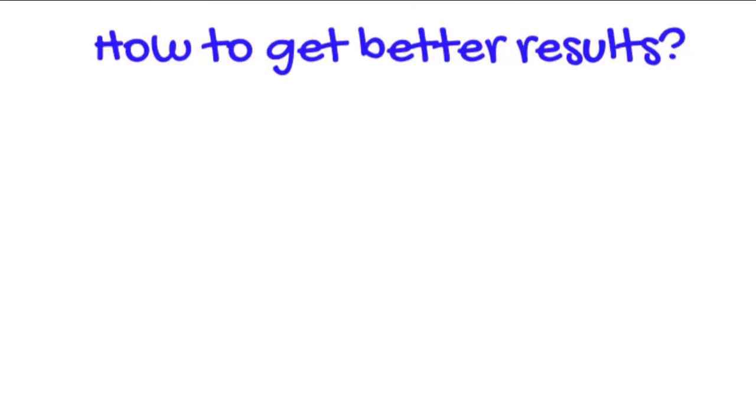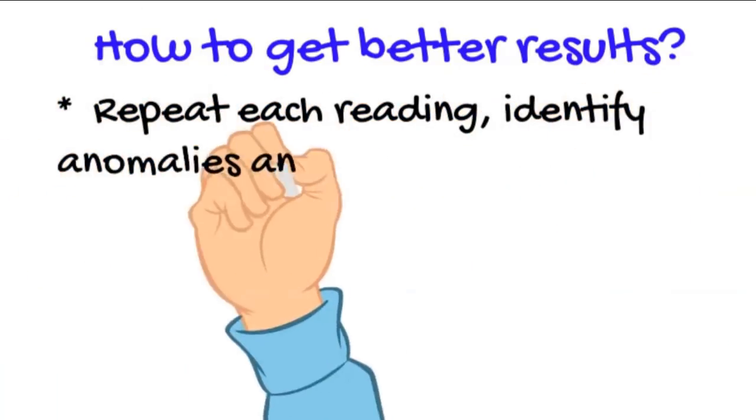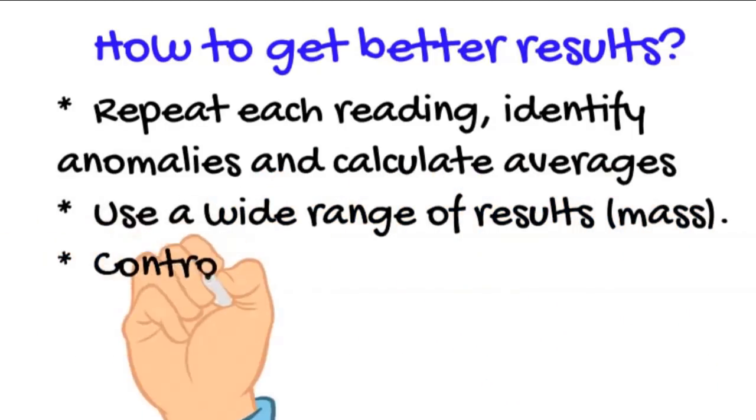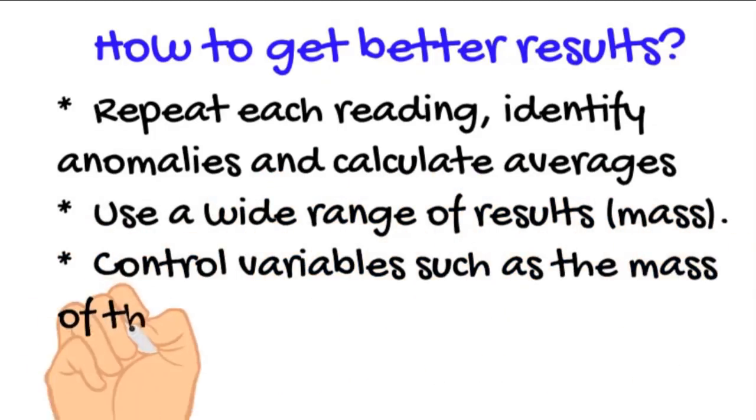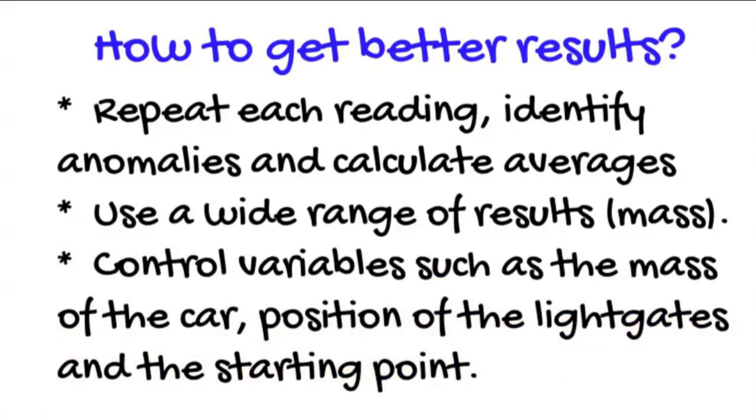We mentioned the quality of results. These can be improved by repeating each reading, identifying anomalies, and calculating averages. Using a wide range of results, a whole range of masses, and controlling variables such as the mass of the car, the position of the light gates, and the release point.